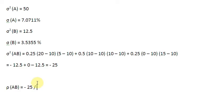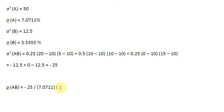The standard deviation of asset A is 7.0711, and we multiply that by the standard deviation of asset B, which is 3.5355. Once we solve this, we find that the correlation coefficient between these two assets is minus 1. So we have two assets A and B which are perfectly negatively correlated with each other.